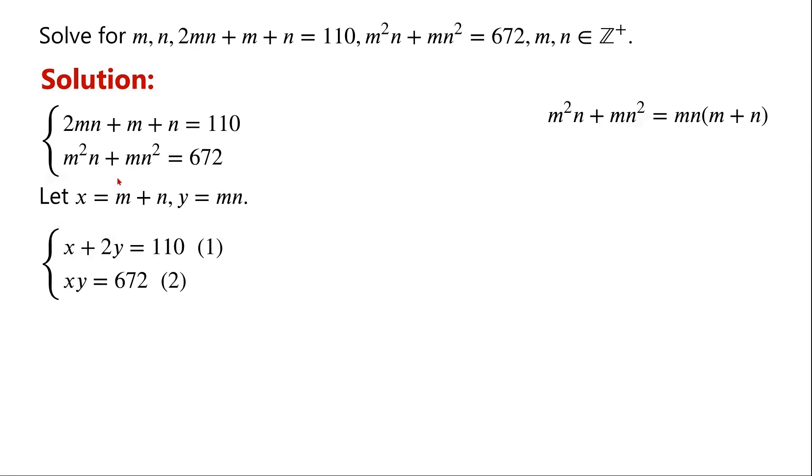Then the given system of equations can be written as X plus 2Y equals 110 and XY equals 672. From equation 1, we can write X equals 110 minus 2Y.